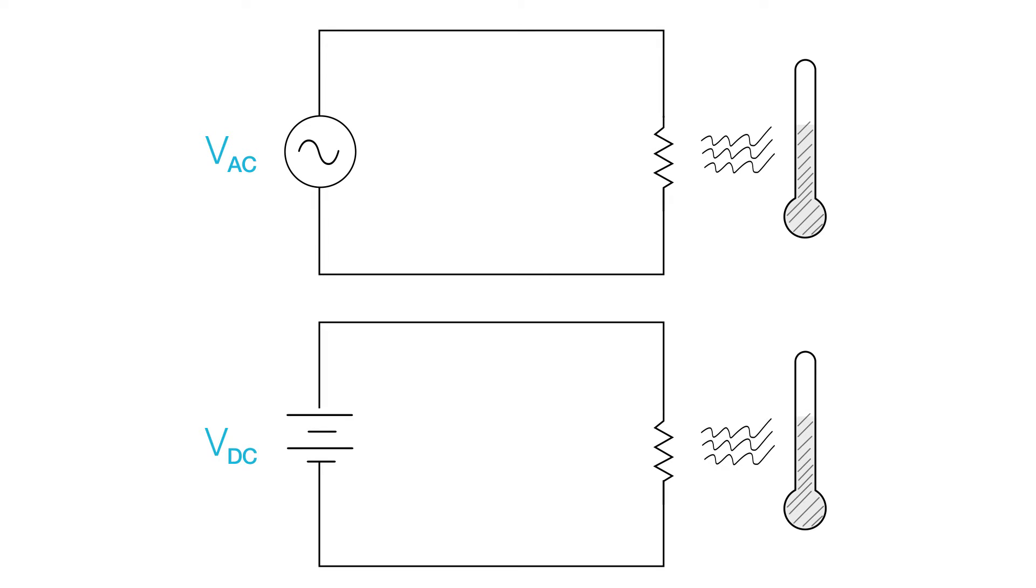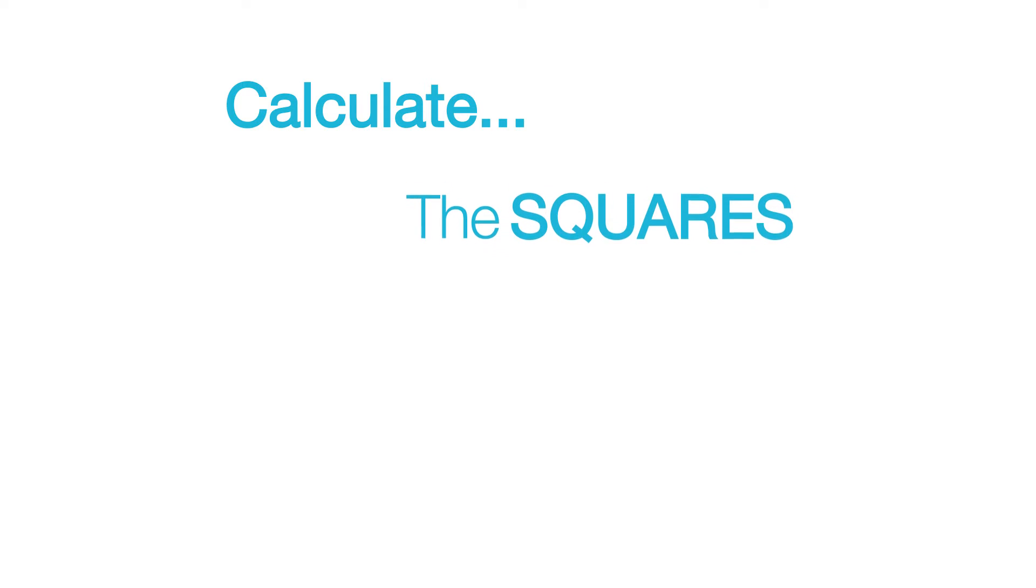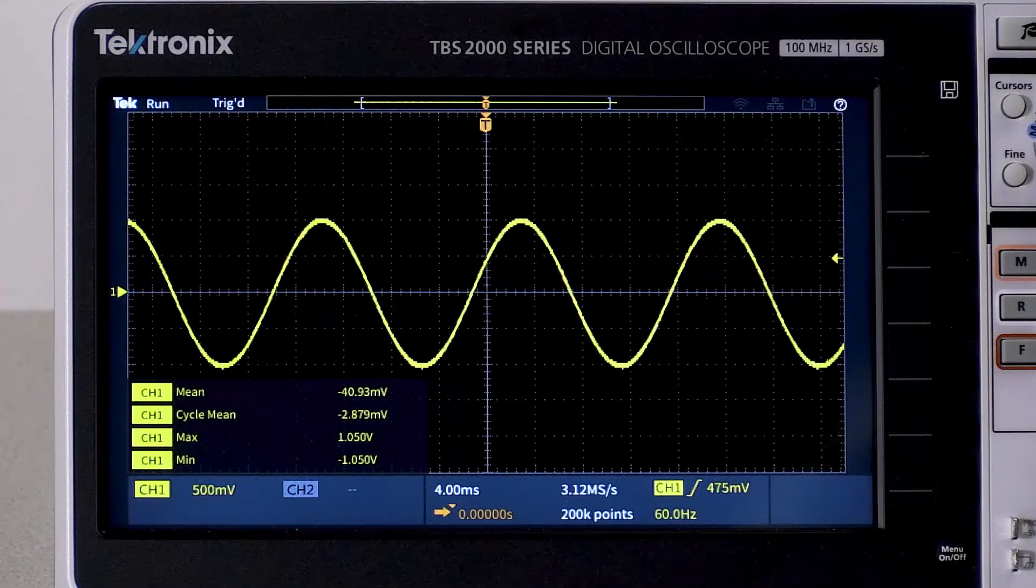For an AC waveform, RMS gives an equivalent DC value that would generate the same heat or deliver the same amount of power. Power is proportional to the square of voltage or current. So when it comes to power, the polarity of the waveform doesn't matter. Negative voltages or current can do just as much work as positive voltages or current. And since an RMS measurement relates to power, it starts by squaring every point in the waveform. Then it takes an average and a square root. An RMS value is always positive.